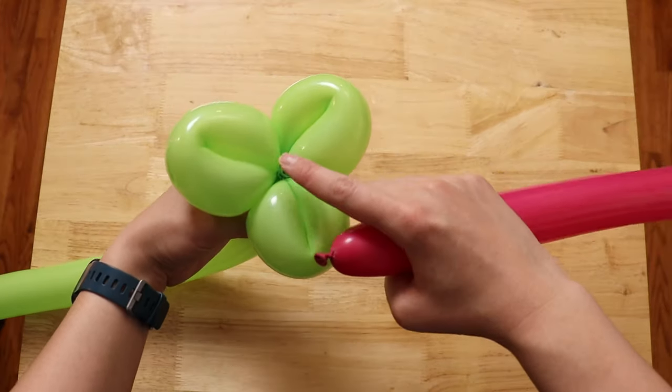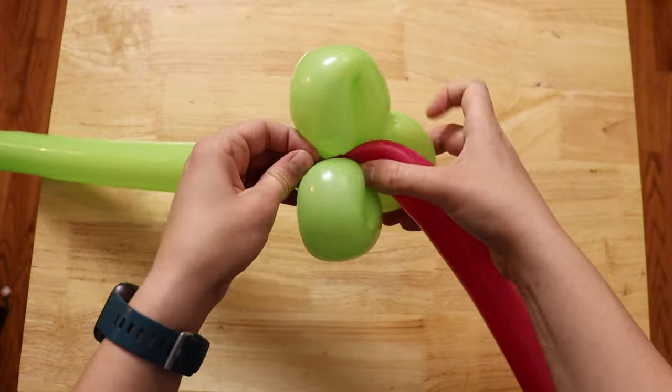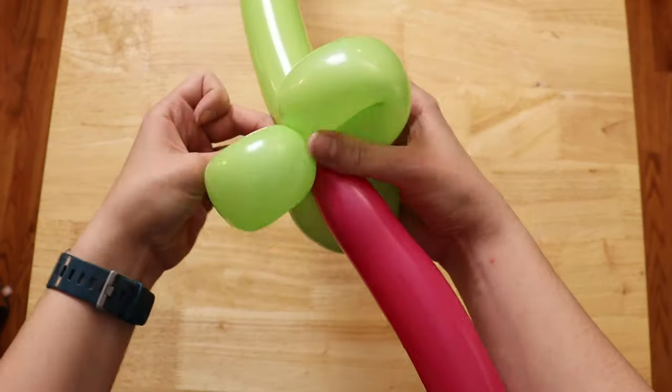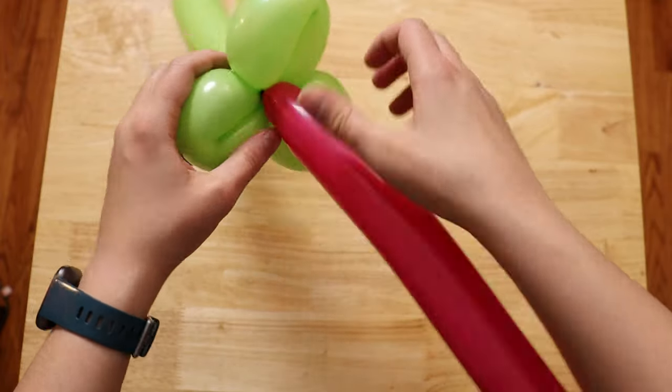Now we need to bring the rose portion and the stem together. So I'm going to set the end of my pink balloon right in the center of my leaves and take the nozzle from the pink balloon and wrap it in and out between a couple of those leaves, ending right against my pink balloon to hide the nozzle.